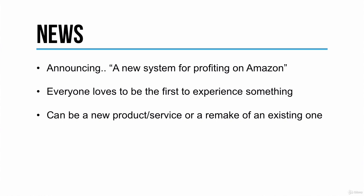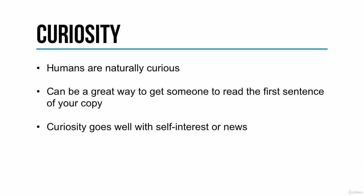The reason news elements are so effective is because everyone loves to be the first to experience something — it's human nature. Finally, there's the curiosity appeal. This is effective because humans are naturally curious, and it can be a great way to get someone to read the first sentence of your copy. However, in the hierarchy of effectiveness, curiosity is third — below news and self-interest. Headlines that only appeal to curiosity are not very effective, but coupling a curiosity headline with a self-interest or news headline can be very effective.